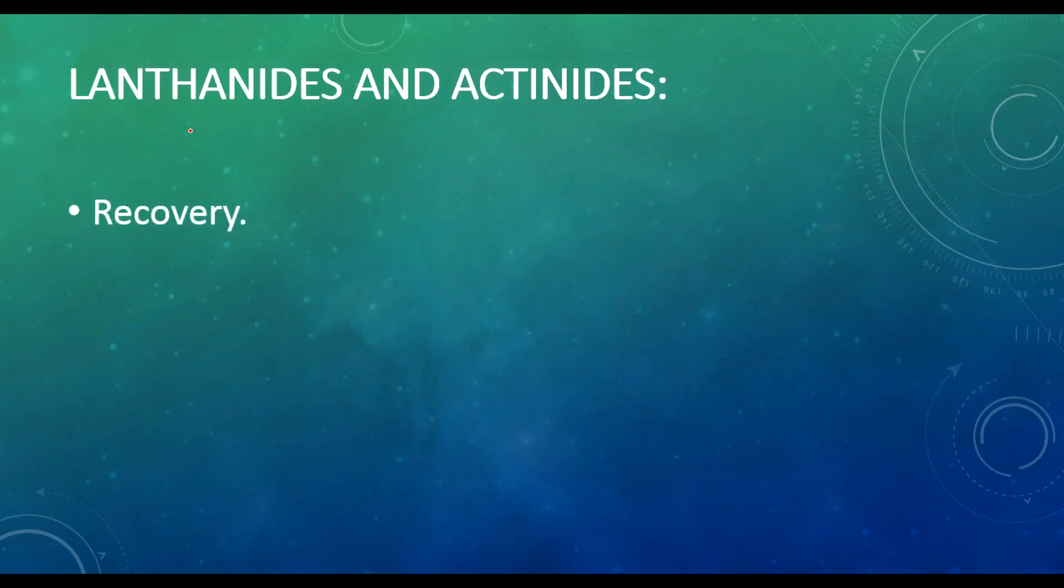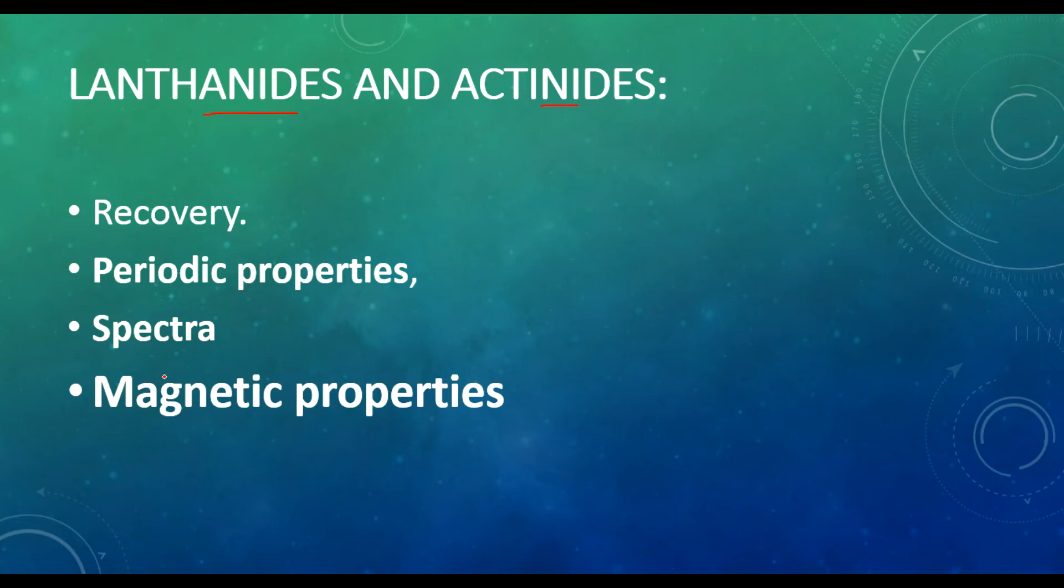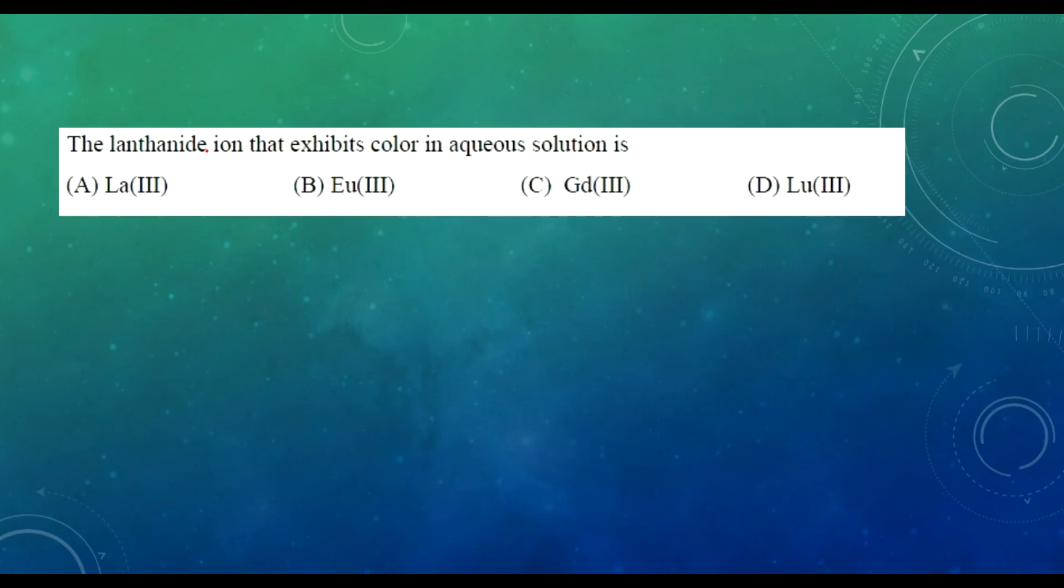From lanthanides and actinides they ask fewer questions but there will be one. The focus is on recovery, periodic properties, spectra, and magnetic properties. Main groups such as cerium 4+, europium, and samarium show deviation from magnetism. The previous year question was on the spectrum, that is the color of aqua solution.